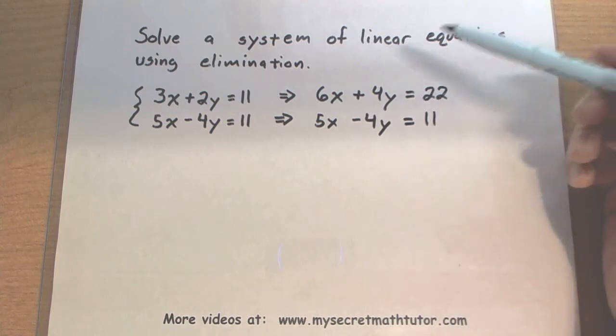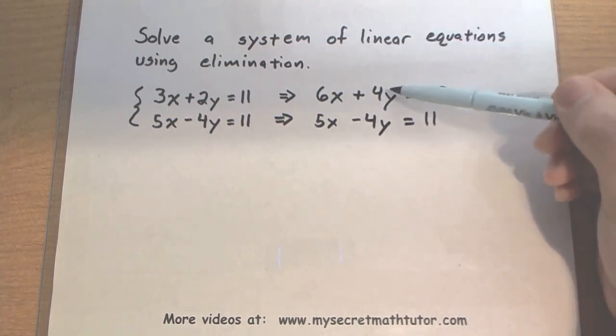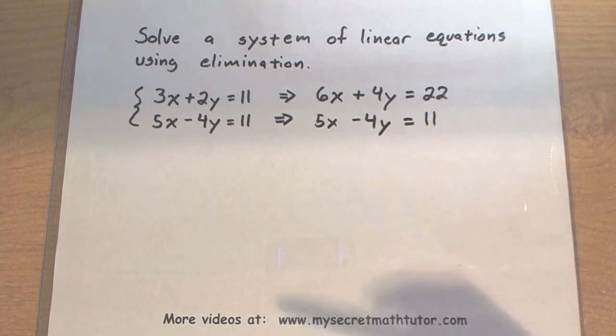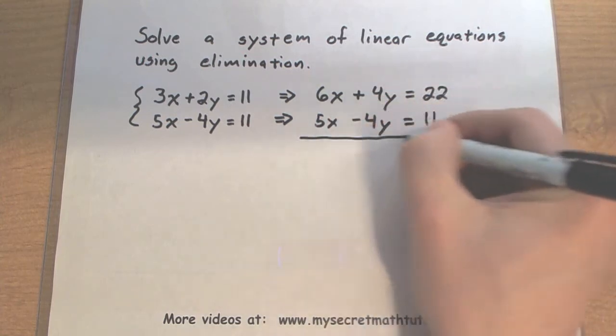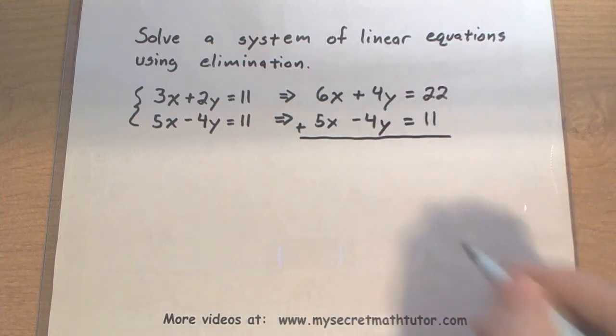Now notice that by multiplying that first one by 2, I now have a plus 4 and a minus 4. When I add these two equations together, my y's will now cancel each other out.